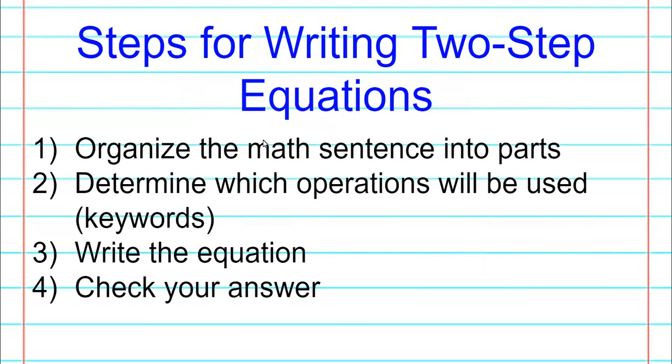Now we have steps for writing a two-step equation. Organize the math sentence into parts. Step two, determine which operations are going to be used. Those are your keywords that we just had on the other slide. Step three, write your equation. Step four, check your answer. Press pause, write this down. And we're going to put these steps into action on the next screen.